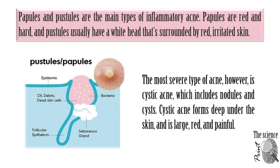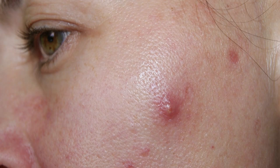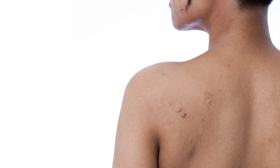The most severe type of acne is cystic acne, which includes nodules and cysts. Cystic acne forms deep under the skin, and is large, red, and painful. This is the type of acne that worries dermatologists most, as it has the highest chances of causing permanent scarring.